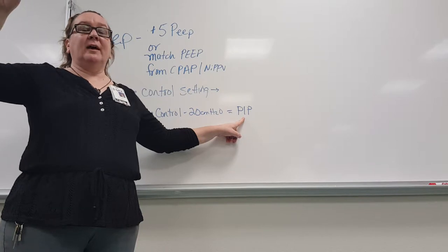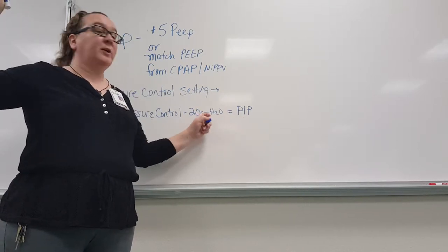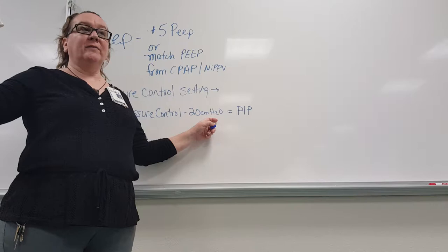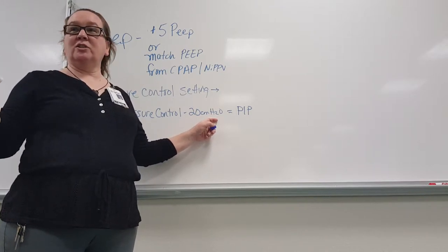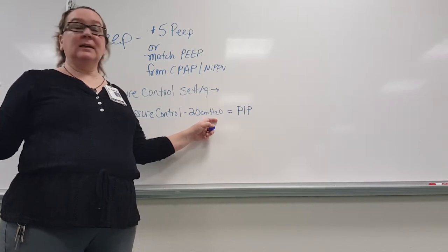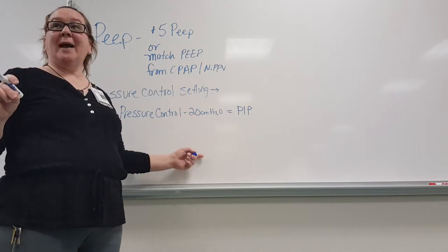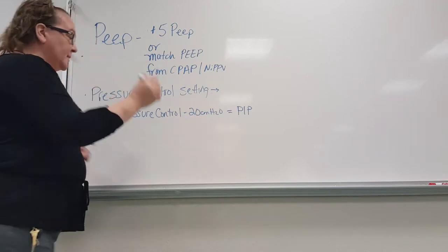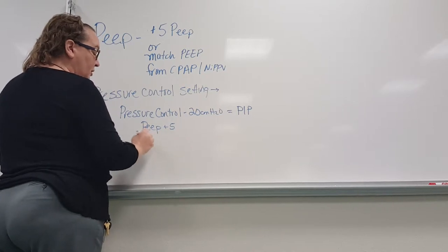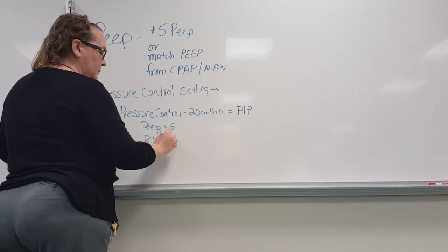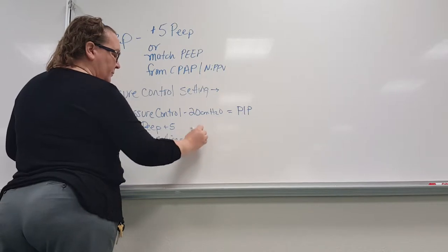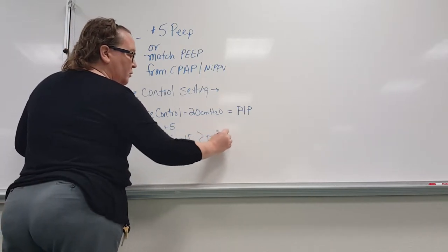When you're looking at your vent, your inspiratory pressure should equal whatever the pressure control setting the doctor gave you. On all the vents except the Draeger, you have to take PEEP into consideration. So your actual pressure control setting equals the pressure control ordered by the doctor minus the PEEP. For example, if the patient is on PEEP of 5 and the ordered pressure control is 20, your pressure control setting will be 15, PEEP will be 5, and together they equal 20.